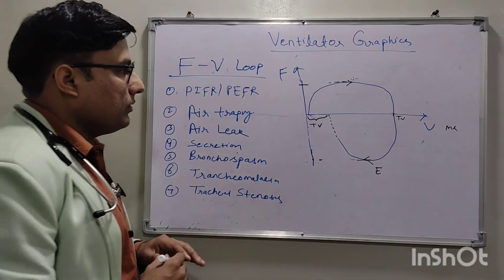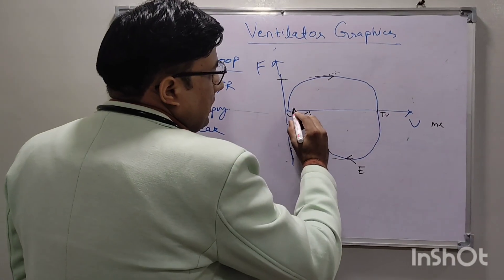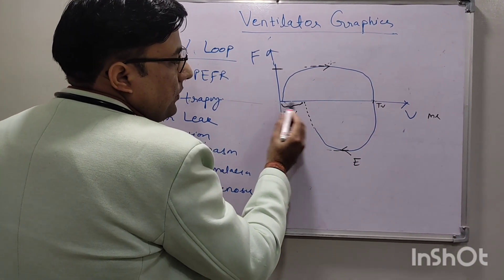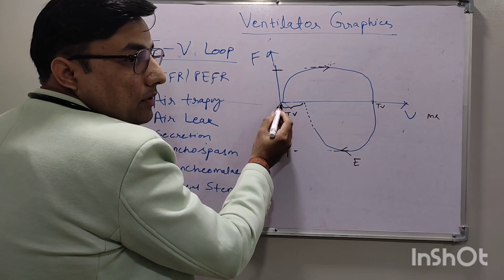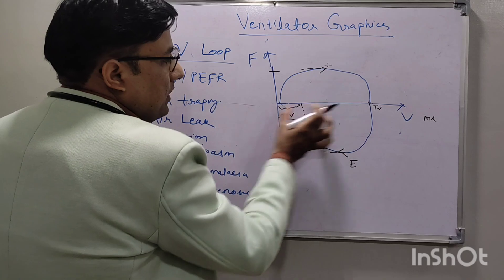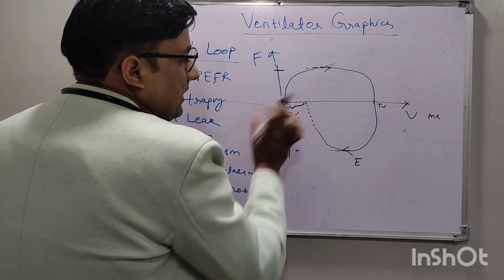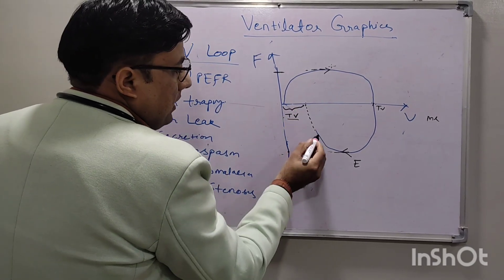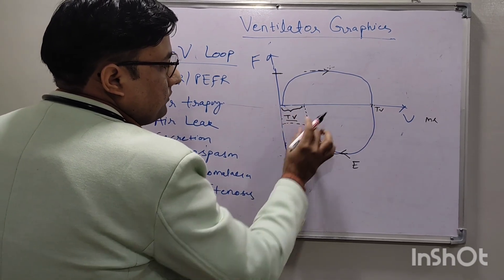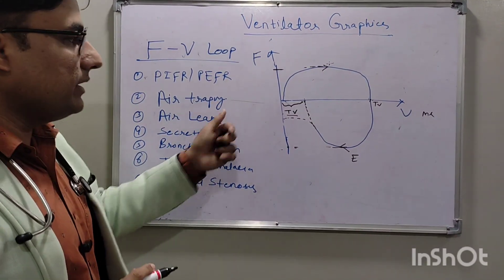We can also see air leak. If there is any air leak — partial leak or air leak syndromes — during the expiratory curve it will return to baseline earlier. This tidal volume is not returning in expiration, so this much tidal volume is lost. This is the difference between air leak and air trapping: in air trapping the curve doesn't reach zero, whereas in air leak the curve returns to baseline earlier.